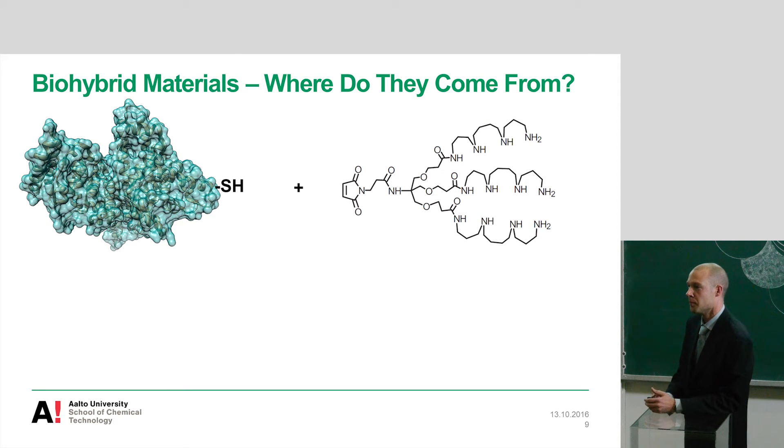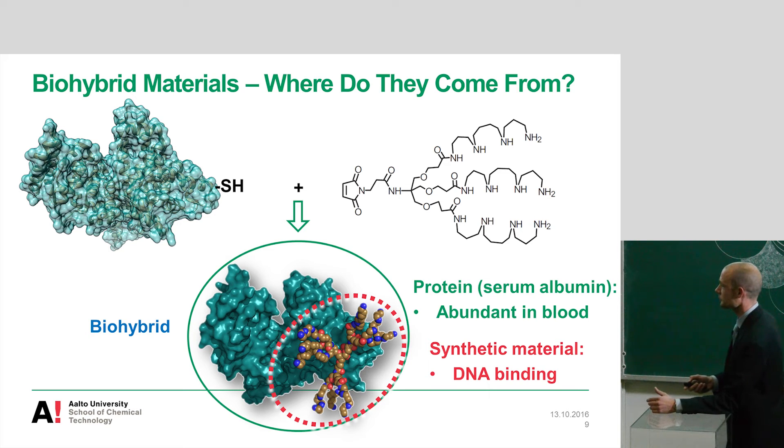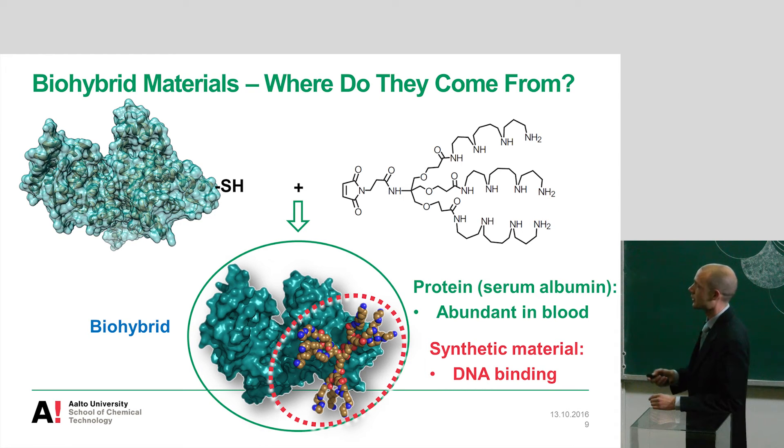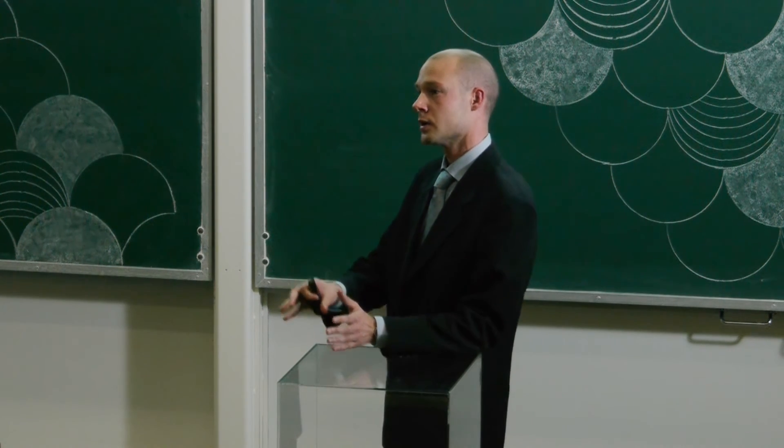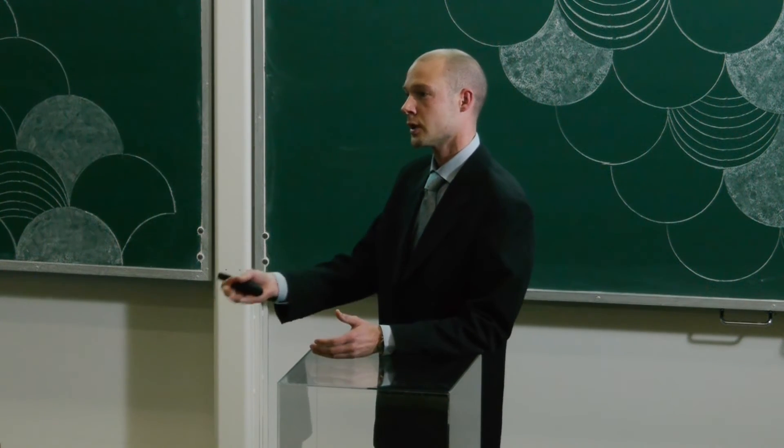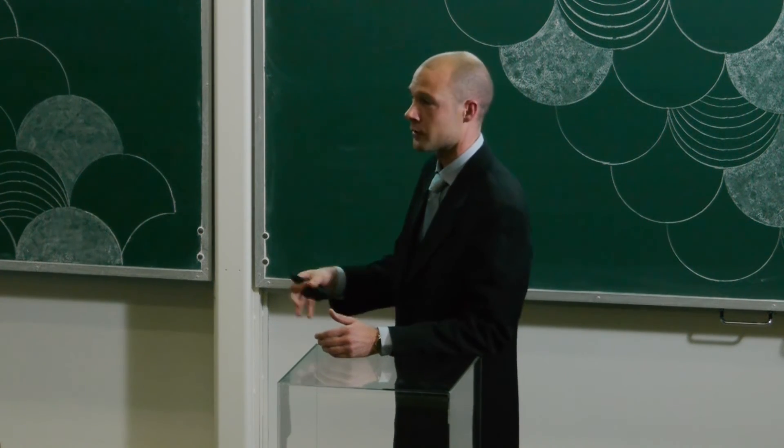And now we have the biomolecule ready, the synthetic molecule ready, and these can then be conjugated together to make the biohybrid. And this is, for example, an actual research example that we have made, taking a serum albumin that is a protein that is very abundant in your bloodstream and packed with it with a polycationic molecule that is known to bind DNA extremely efficiently. So now we have a hybrid where we have taken a biomolecule that naturally does not bind to DNA, but through the synthetic modification it can do so. And this can then be used for different biotech applications.